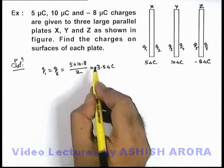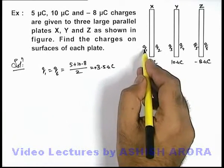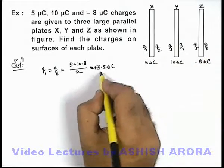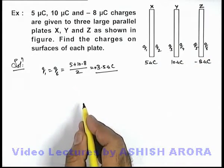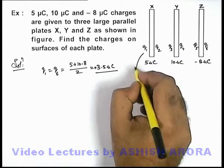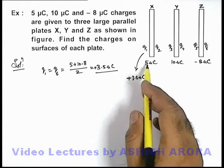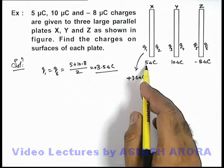So we can say that the charge on the left face of the plate X and the right face of the plate Z will be plus 3.5 micro coulomb. And if this charge is plus 3.5 micro coulomb and the total charge on the plate is 5 micro coulomb...